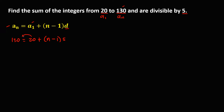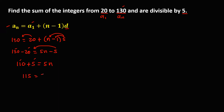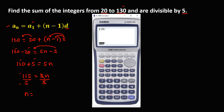Simplify: transpose this positive 20, so that becomes negative 20. Distribute the 5: so 5 times n is 5n, and 5 times negative 1 is negative 5. So 130 minus 20 is 110, and transposing negative 5 becomes positive 5, then equals 5n. So 110 plus 5 is 115, equals 5n. To solve for n, divide both sides by 5: n equals 115 divided by 5, which is 23.